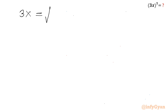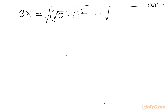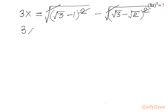So I write 3x = √((√3 − 1)²) − √((√3 − √2)²). We can cancel the square and square root, so 3x = (√3 − 1) − (√3 − √2). Expanding: √3 − 1 − √3 + √2. The √3 terms cancel out, so 3x = √2 − 1.